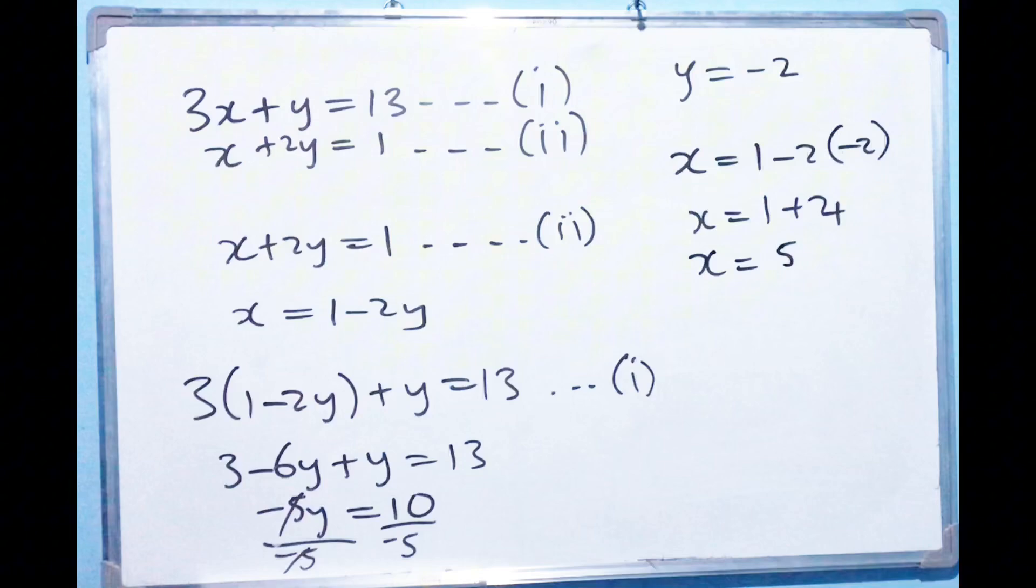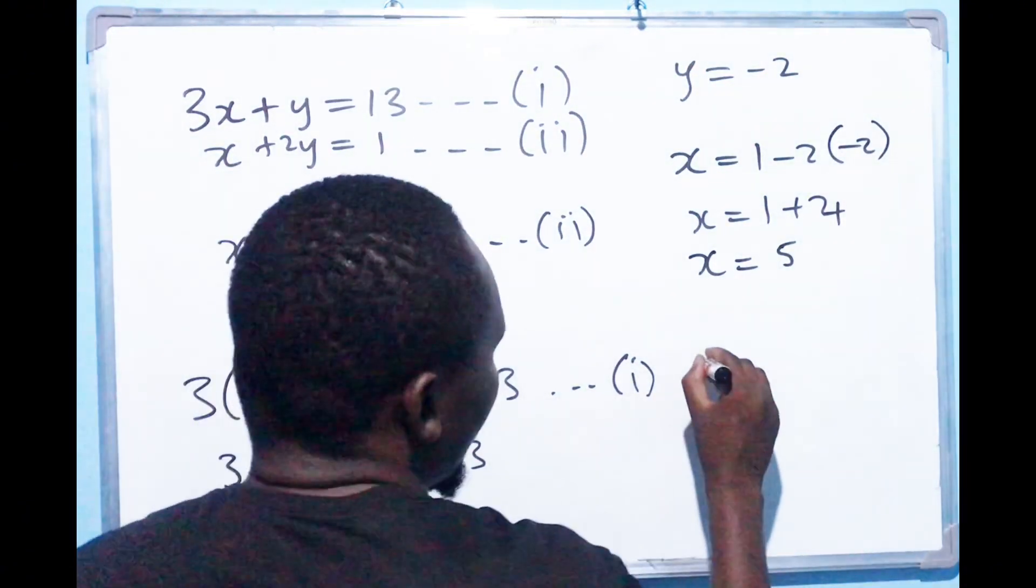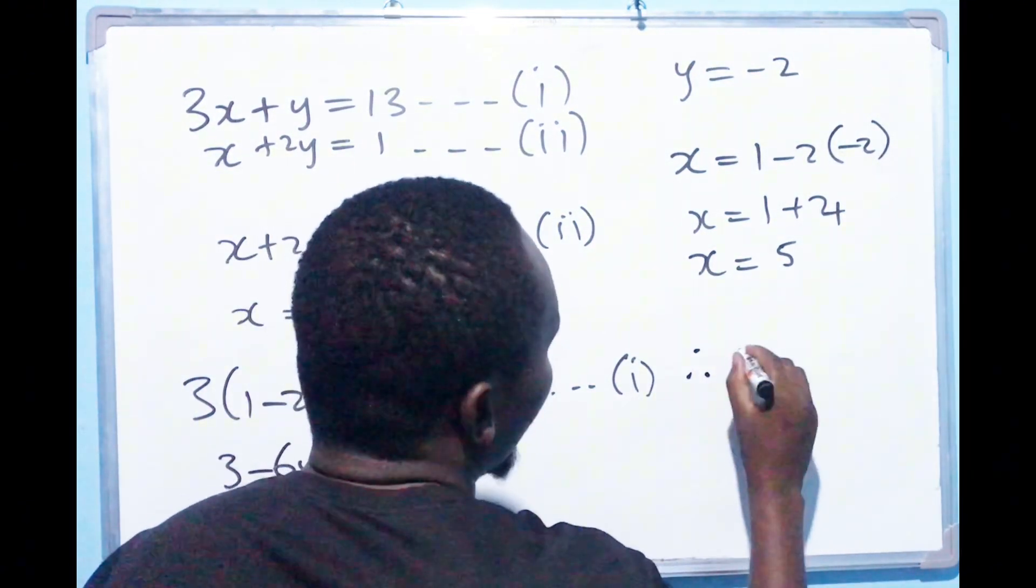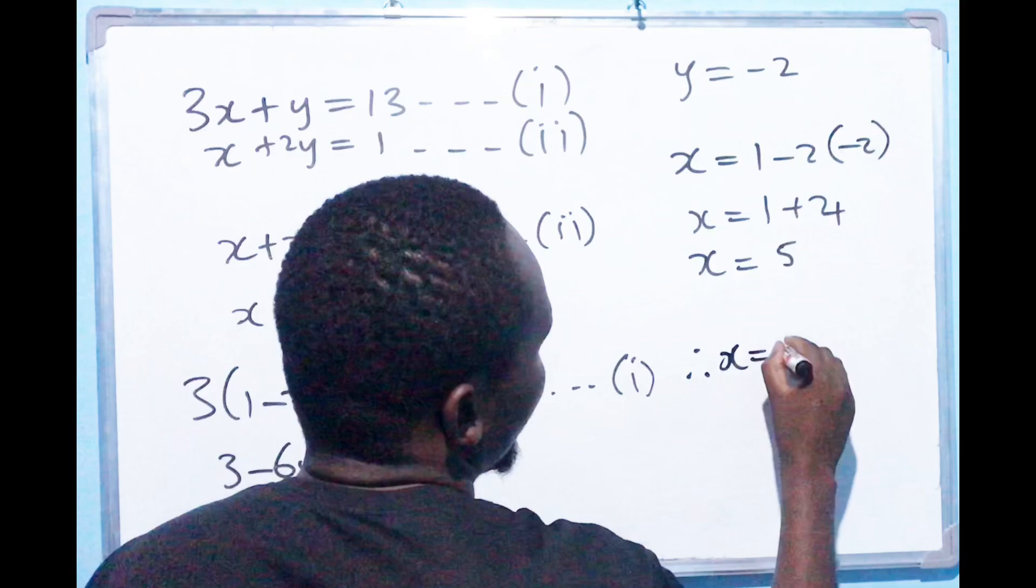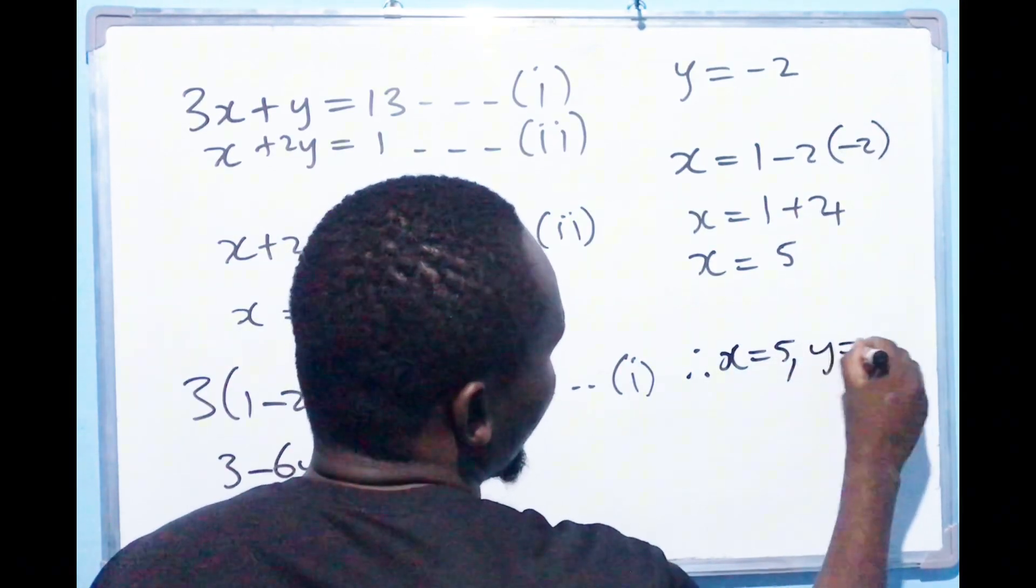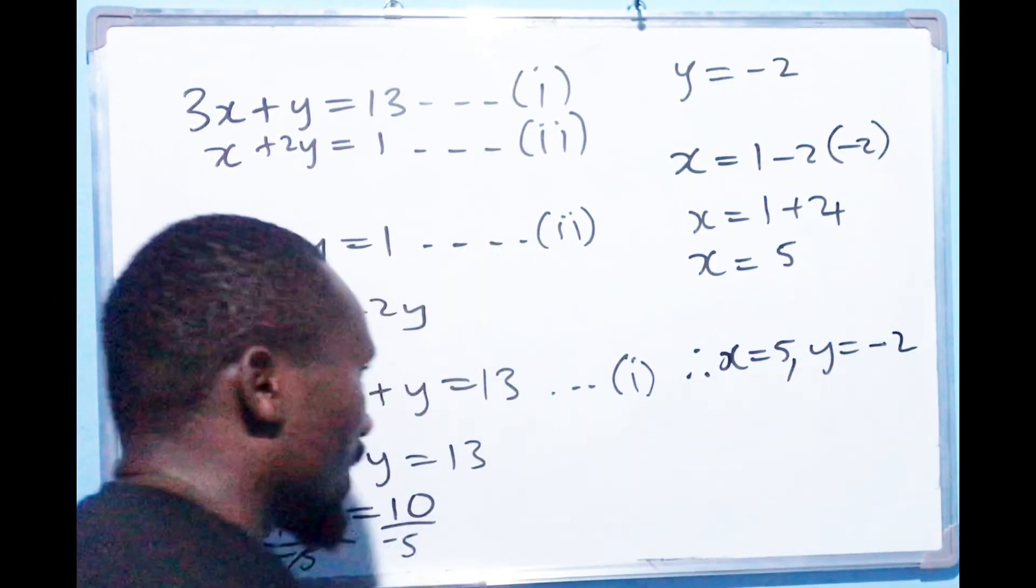So now we have our answer. So therefore X equals to 5, Y equals to negative 2.